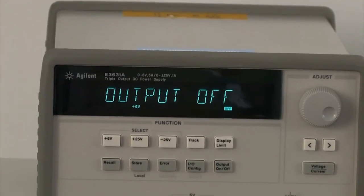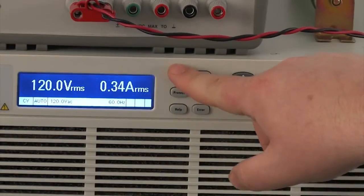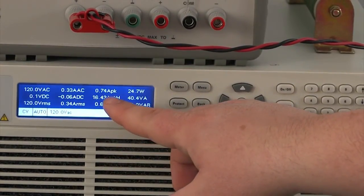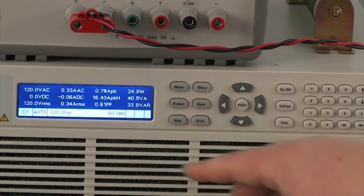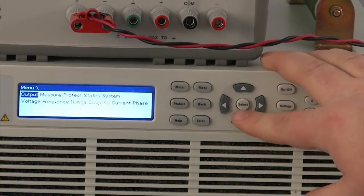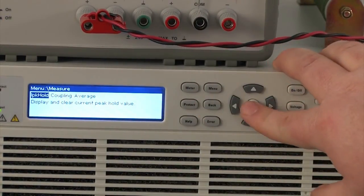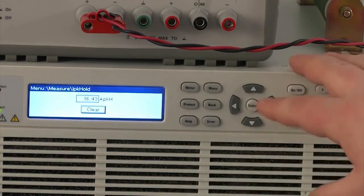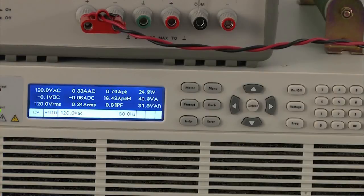So now what we're going to do to get the actual inrush measurement is we're going to hit meter. If you hit meter twice, you could actually go and get the IP cold right here. So you can see we measured 16.43 amps. You can also go to the measurement menu here and click on this IP cold and you get the same measurement here.